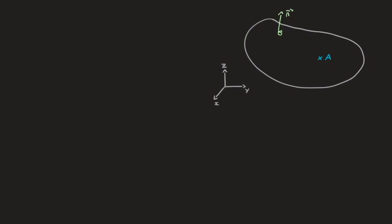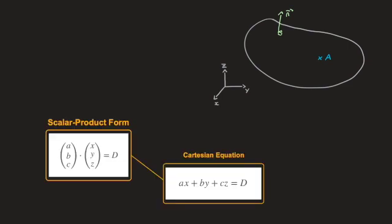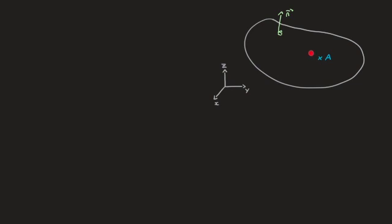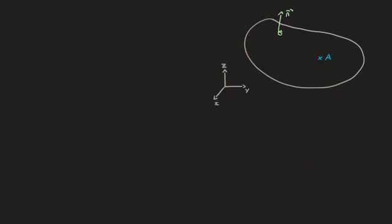In this video I'll be showing you how both the scalar product form and the Cartesian form of a plane's equation are derived, starting from a normal to the plane, as well as the coordinates of a point contained in the plane. I'll also be showing you how to find the perpendicular distance from a plane to the origin. The objective of this video is for you to really develop an understanding of the equations we use when working with 3D planes.